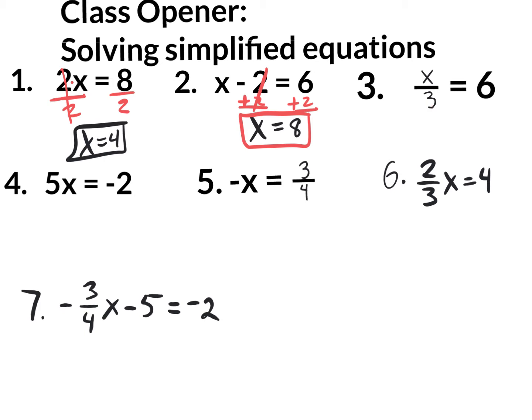The next one says x over 3, which really means x divided by 3. Your goal to solve any equation is to get x by itself — you want x equals a number. You don't want x divided by 3 equals a number. So how do I get rid of this divided by 3? Multiply by 3. What I do to one side I do to the other. The 3 in the numerator divided by 3 on the bottom cancels out, leaving a beautiful x. The equal sign comes down and 6 times 3 is 18.